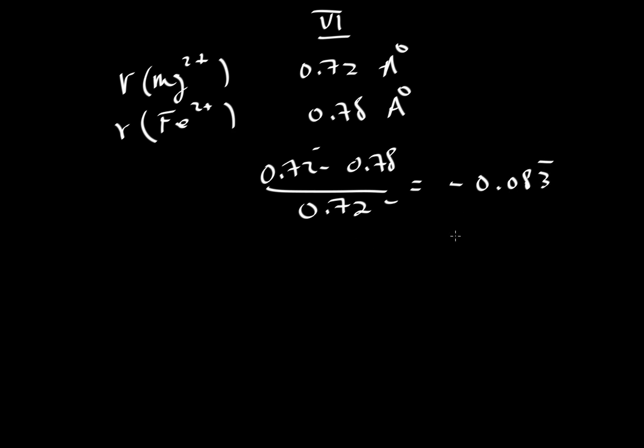We would get a value of minus 0.0833, so that is equal to 8.3%. The radius of magnesium is 8.3% smaller than iron, but that is less than our critical value of 15%. We only care about the absolute value here, not the negative sign. Since it's less than 15%, we should expect a complete solid solution. Those of you who are familiar with the olivine series already know that forsterite and fayalite can mix with each other in any proportions.